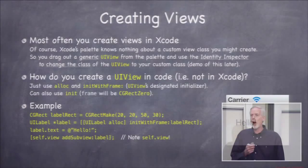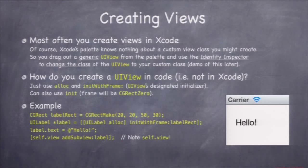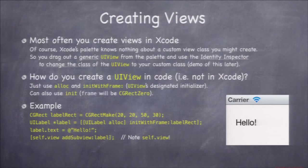Here's an example of creating a UILabel in code. You say UILabel init with frame, give it a rectangle in the superview's coordinate system, and then add subview with that label to self.view, which is the top-level view in the view controller. It ends up at 20x and 20y, and it's 50 wide and 30 high in the MVC's view.